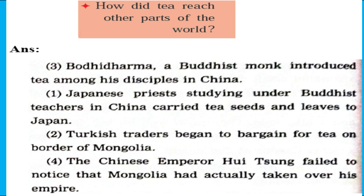Question nine: How did tea reach other parts of the world? Answer: Step by step — first, Bodhidharma, a Buddhist monk, introduced tea among his disciples in China. Then Japanese priests studying under Buddhist teachers in China carried tea seeds and leaves to Japan. Then Turkish traders began to bargain for tea on the border of Mongolia. Afterward, tea spread to Japan, then Cambodia, then England and India, and eventually all over the world.